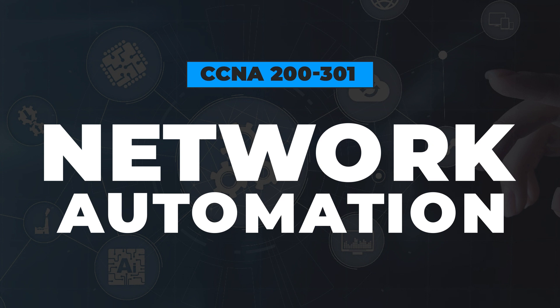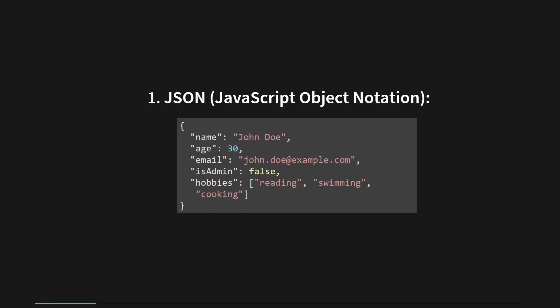JSON, JavaScript Object Notation, is a lightweight and human-readable data interchange format widely used for transmitting and storing data. Its simplicity and ease of parsing make it a popular choice for exchanging information between different systems. JSON is structured as a collection of key-value pairs enclosed within curly braces. The keys are represented as strings enclosed in double quotes followed by a colon, and the corresponding values can be strings,